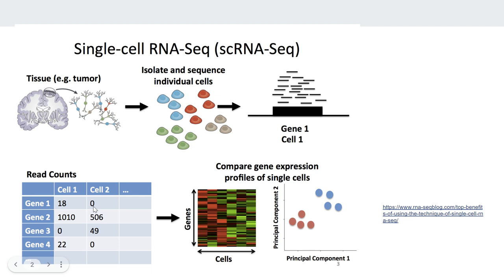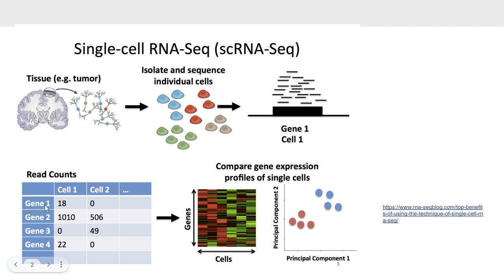Similarly, in cell 2 that gene is not detected. For gene 2, the count is 1010 here and 506 in cell 2. The number of columns equals the number of cells captured — so if 100 cells are captured, there are 100 columns. This is the ultimate data we get, and we use it for downstream processing like normalization and other analyses to study what cell types are present in the tissue. The brief overview: extract the cell, extract RNA from each cell, sequence them separately, count gene abundance in each cell, then do downstream analysis.